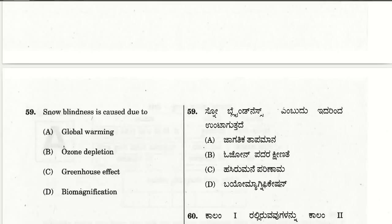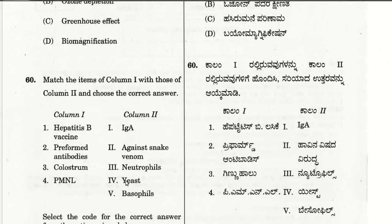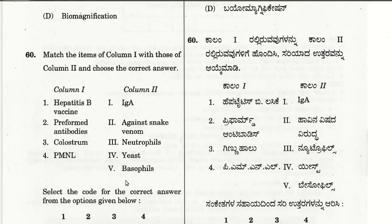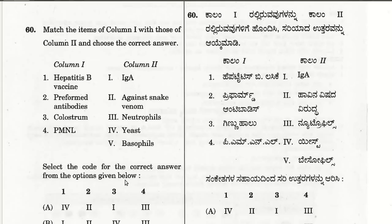The sixtieth question, the last one: match items of column 1 with column 2. The hepatitis B vaccine is produced using yeast.